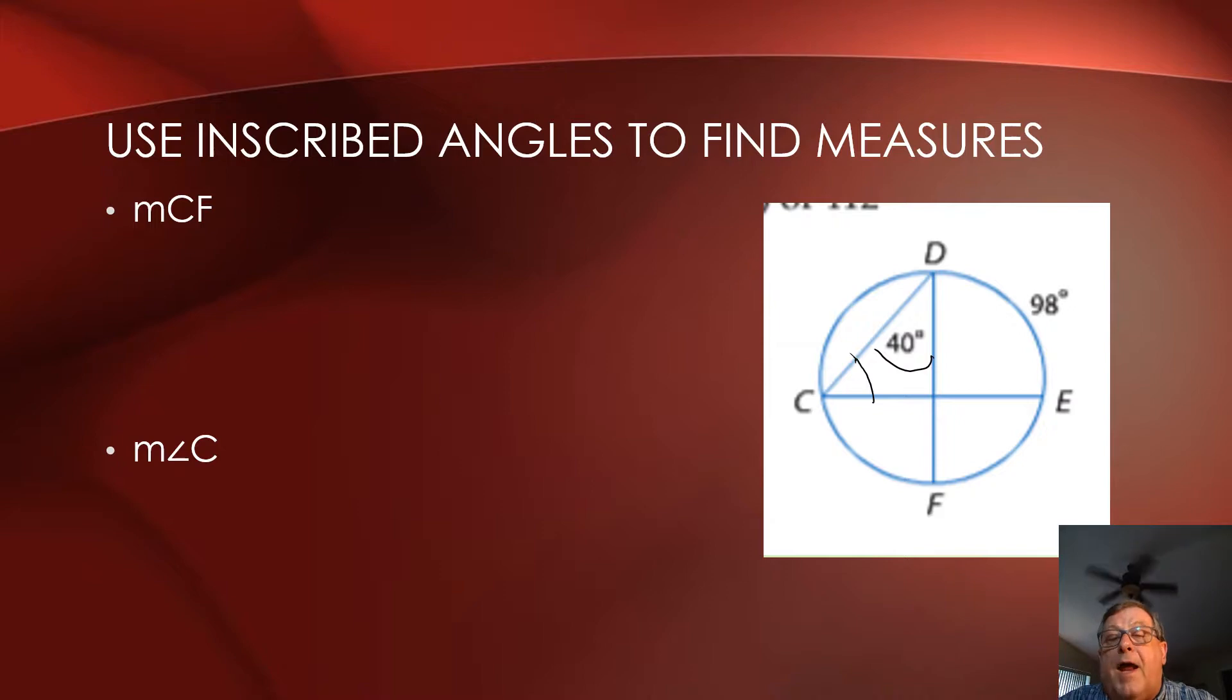Now, we've got a theorem here, the inscribed angle theorem. And the inscribed angle theorem says that if we've got an inscribed angle, the measure of that angle is one half of the measure of its cord. And then there's the flip side of that. If we know the measure of a cord, well, the angle is twice that measure.